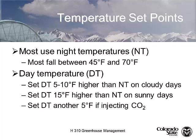To set our temperature regimen, we figure out what the night temperature is, and our day temperature on a cloudy day ranges anywhere between 5 and 10 degrees Fahrenheit above the night temperature. So if you have a 65-degree night temperature, you're shooting for a 70 or 75-degree day temperature.